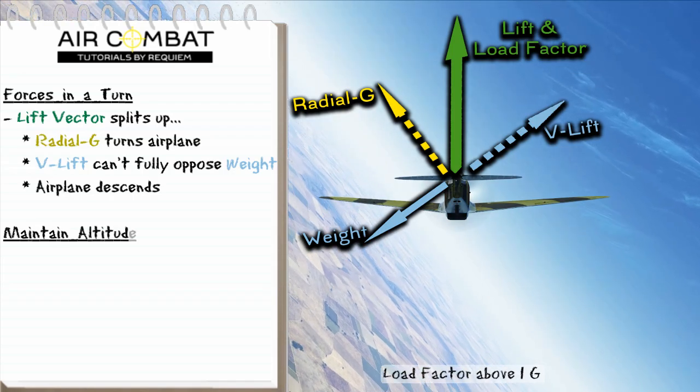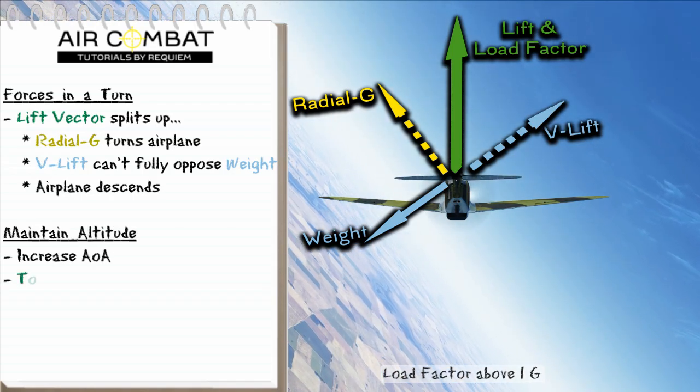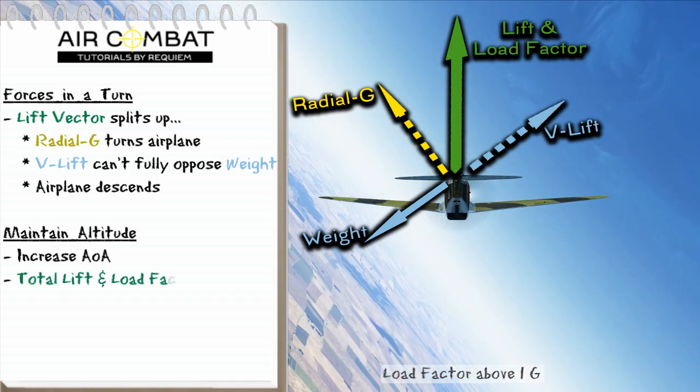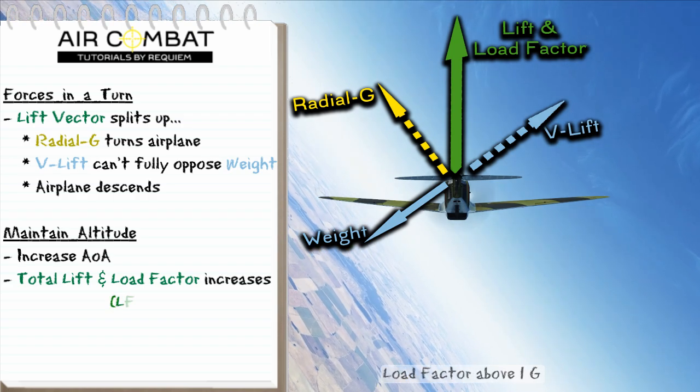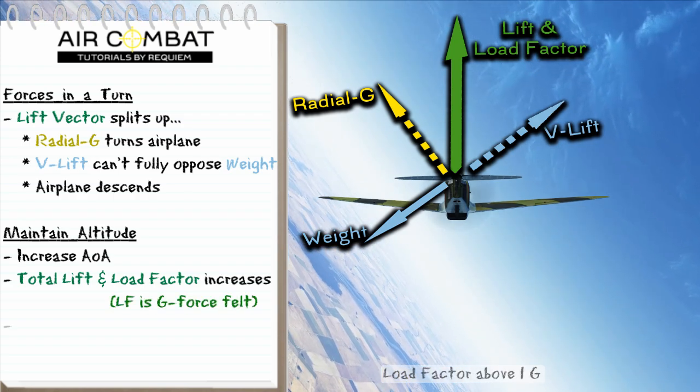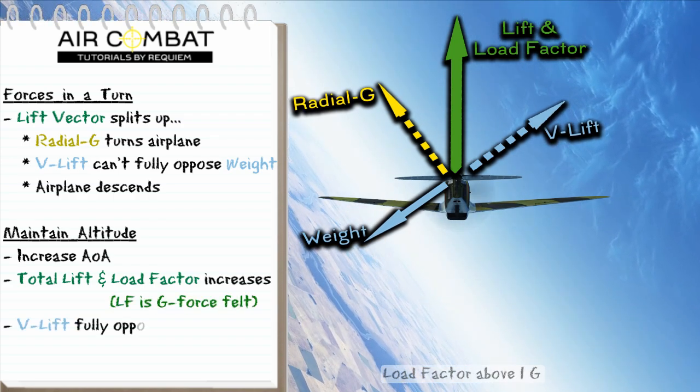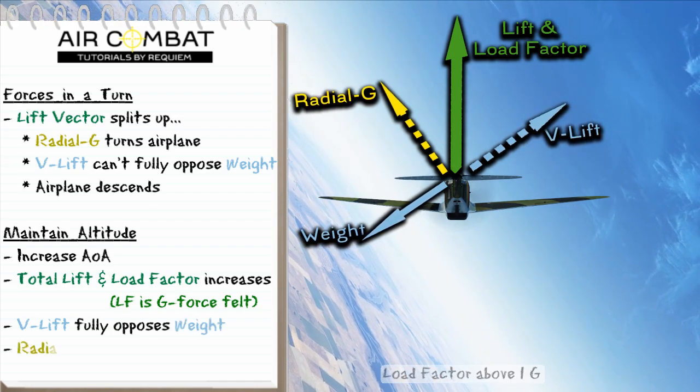We want to halt the altitude loss, so we pull back on the stick, and increase our lift and load factor. This in turn increases the vertical lift to fully oppose the weight, so we stop losing altitude, and also increases radial G, so we will end up turning faster.